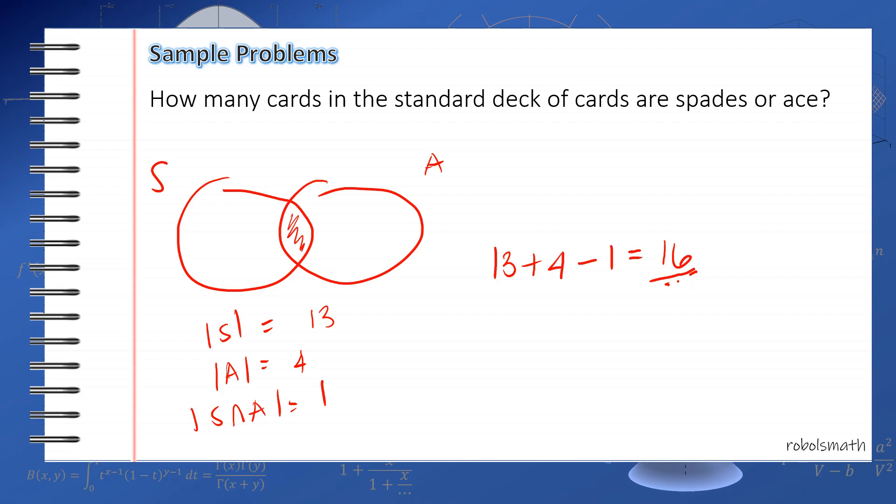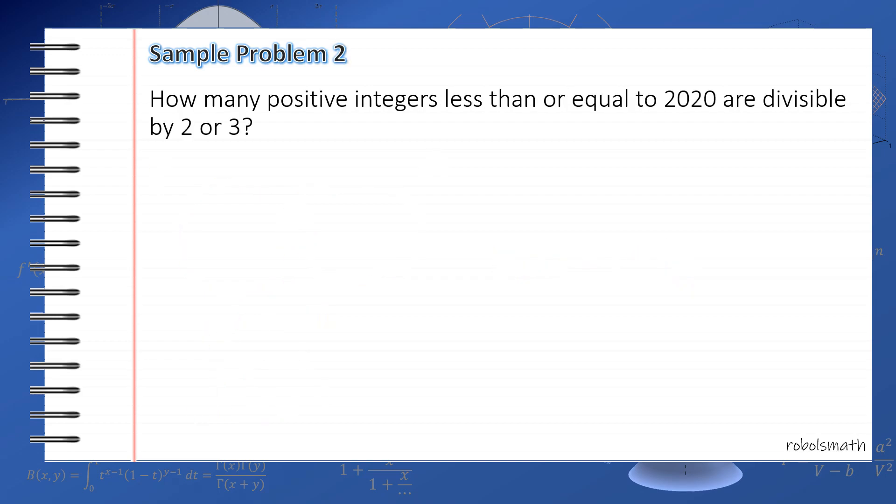Next sample problem. How many positive integers less than or equal to 2020 are divisible by 2 or 3? This is much related to the problem we want to solve, except that this is simpler because we only have two divisors. So again, let's draw two circles. A being the numbers divisible by 2 and B being the numbers divisible by 3.